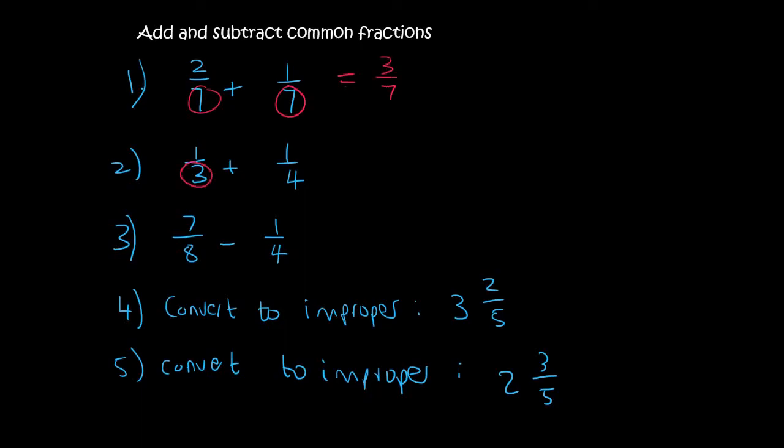For number 2, the denominators are not the same. Now the lowest number that links those two together would be 12. So you would have to multiply this one by 4, and what you do to the bottom, you must do to the top. Then you'd multiply this by 3, and what you do to the bottom, you do to the top. And so that's going to give us 4 over 12 plus 3 over 12, which gives us 7 over 12.